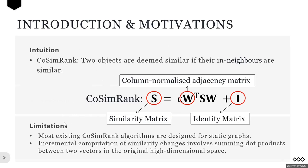However, existing CoSimRank algorithms are designed for static graphs. When applied on dynamic graphs, all the similarities need to be recomputed from scratch. This highlights how we need to study efficient incremental computation of CoSimRank similarity.